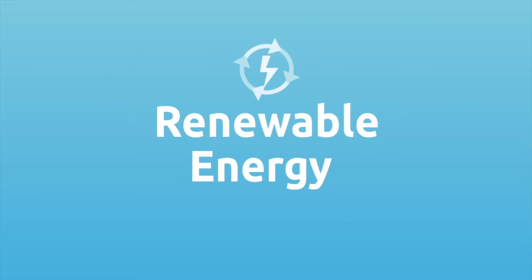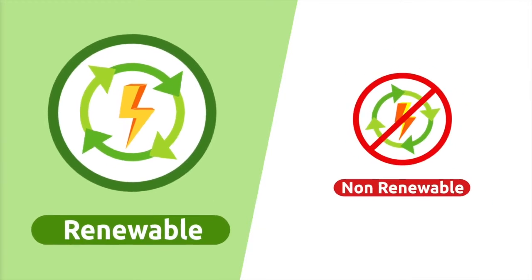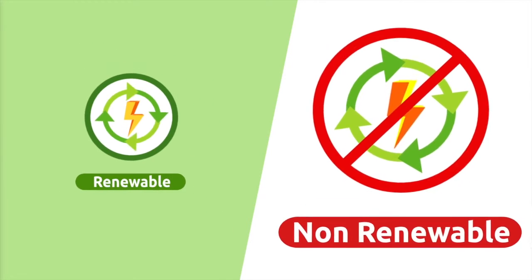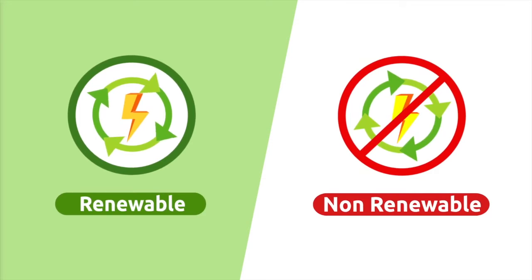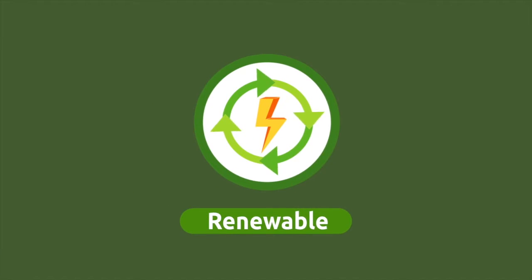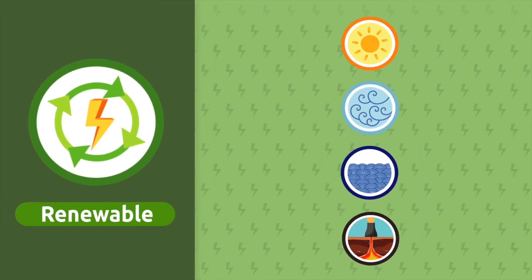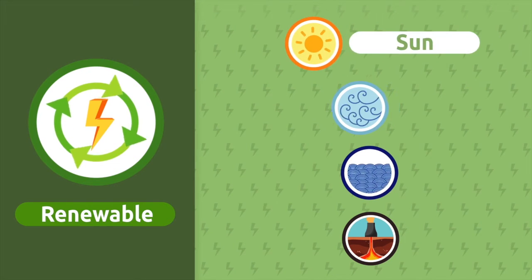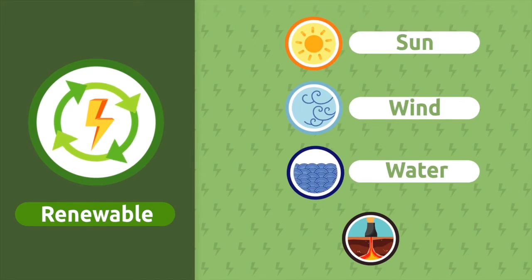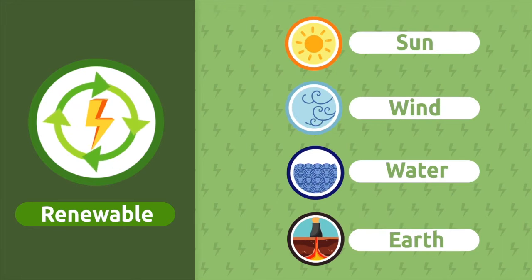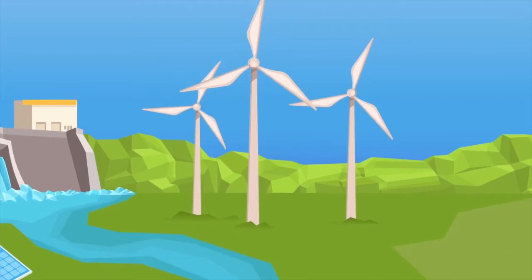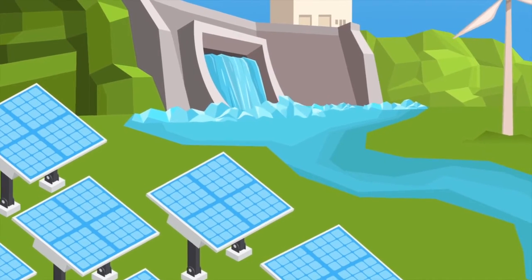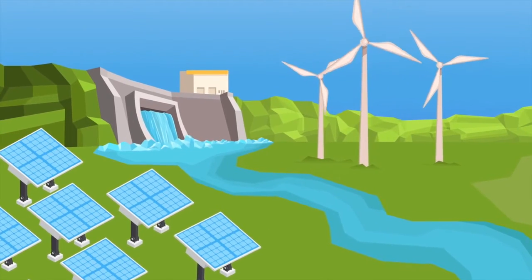Renewable energy. We obtain energy from two different sources: renewable energy sources and non-renewable energy sources. Today we're going to learn about renewable energy sources. Renewable energy refers to all those limitless energy sources present in nature. The sun, the wind, the force of water, or the inner heat of the earth are examples of renewable energy sources.